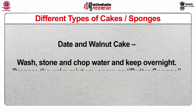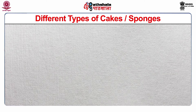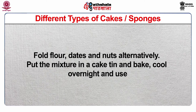Date and walnut cake: wash, stone and chop dates and keep overnight. Prepare the cake mixture same as butter sponge. Fold flour, dates and nuts alternately. Put the mixture in a cake tin and bake. Cool overnight and use.